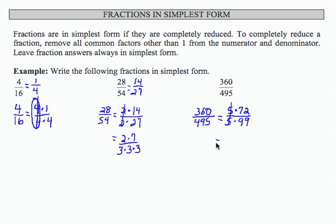72 and 99. Well, 72 is divisible by 9. That's 9 times 8. 99 is also divisible by 9. That's 9 times 11. I can remove the common factor of 9. All I have left is 8 over 11. 8 and 11 have no common factors other than 1. So 8 over 11 is 360 over 495 in simplest form.